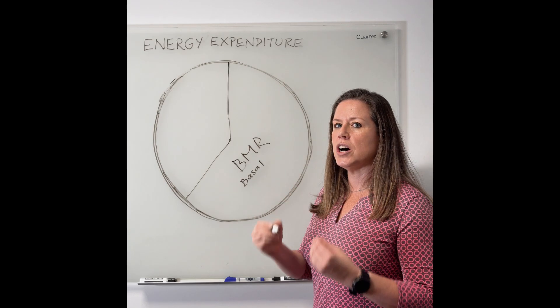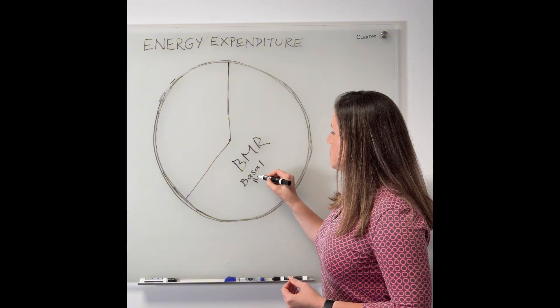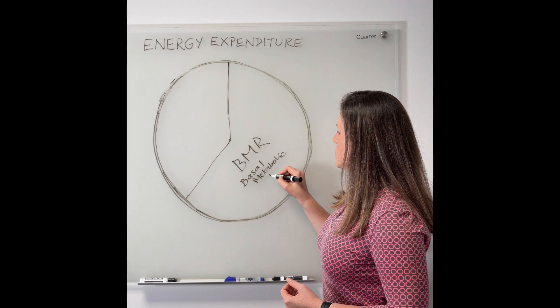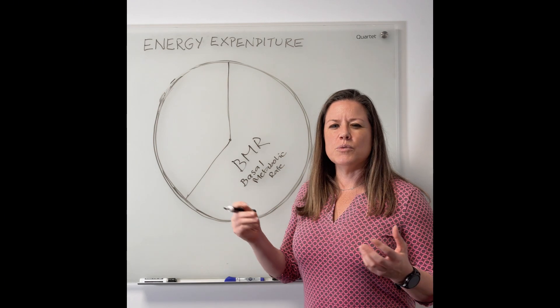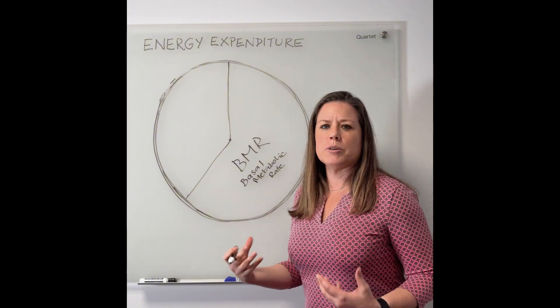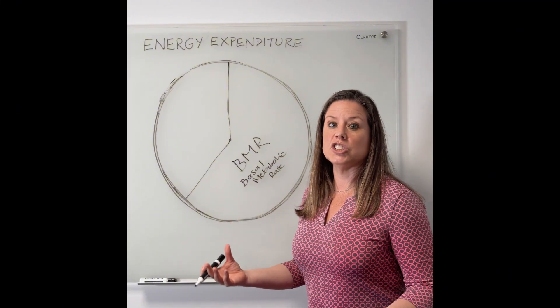All this area in here is what you would consider BMR or basal metabolic rate. Okay, this is what it costs the body to keep the lights on and run your organ systems without catabolizing all your muscle tissue and having a lot of breakdown.